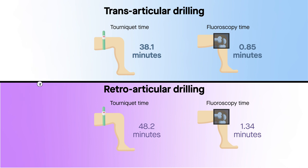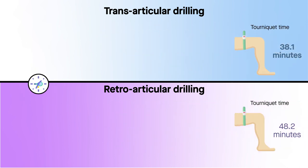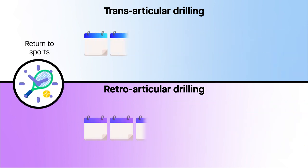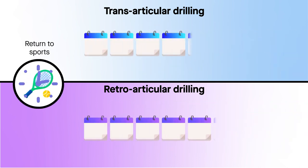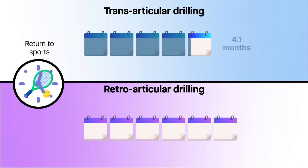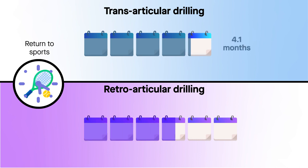With respect to time required to return to sports, transarticular drilling again proved speedier. On average, patients in the transarticular group were cleared to return to sports at 4.1 months, while those in the retroarticular group were cleared at 5.8 months.